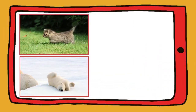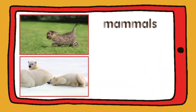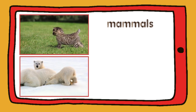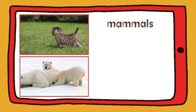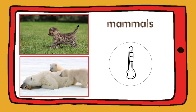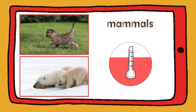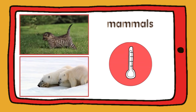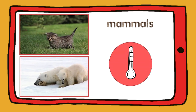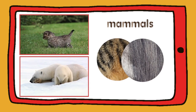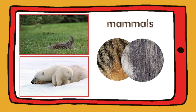Cats and polar bears are mammals. Mammals have got warm blood and they've got fur or hair.